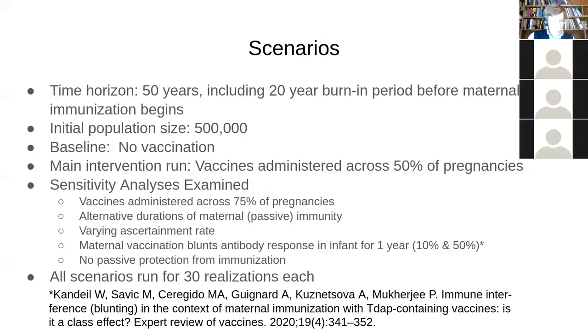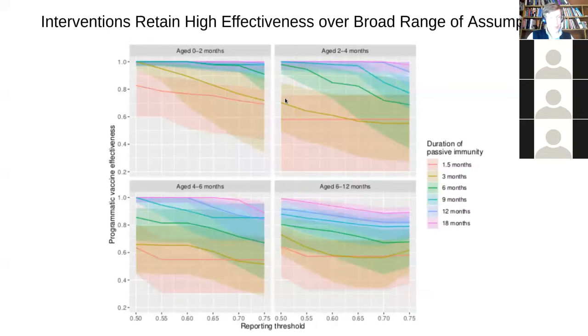Or if we assume if we were to assume only that the maternal immunization doesn't help the infant directly only by protecting the mother, how much does that, how much of the effect of protection comes through the mother being protected from infection. And we run the model, and we run the model because it's stochastic. We ran at 30 realizations each. This is Wade realized the details of this model, much, much of it. It's a population size of 500,000. We ran it for 50 years and we had a 20 year burn in period before maternal immunization begins.